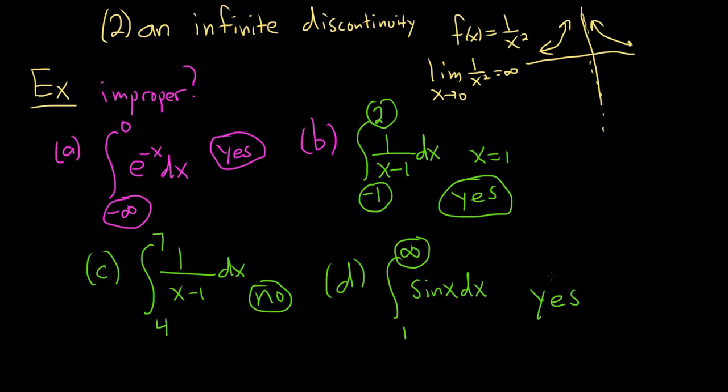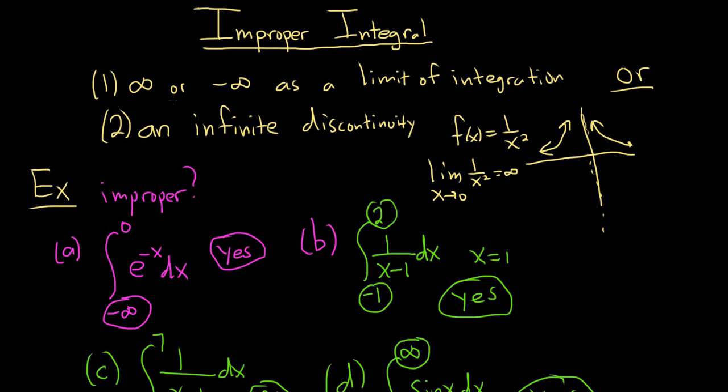So again, as a recap, an integral is said to be improper if you have an infinite limit of integration. In other words, at least one of the limits is infinity or negative infinity, or if you have what's called an infinite discontinuity. Basically, that's just a discontinuity where if you take the limit, you're going to get infinity or negative infinity.